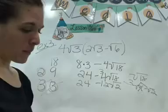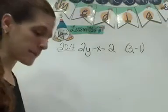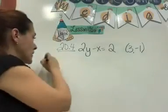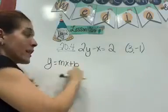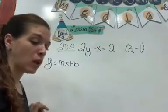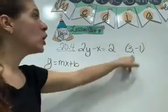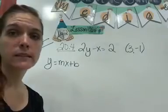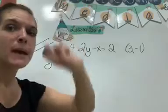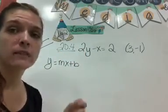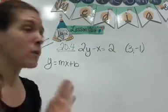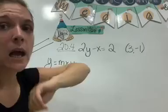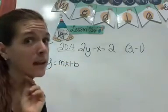Let's get into something about parallel lines. You're going to do perfectly on these if you remember one concept. The problem asks us to find the equation of the line, so we already know we're going to use y equals mx plus c. The line is parallel to 2y minus x equals 2 and passes through a given point. Here's what you need to know: parallel lines always have the same slope. Parallel lines always have the same slope.